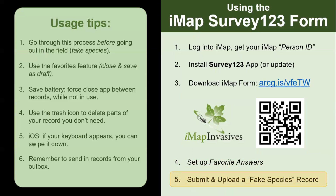Number four: if you started part of a record that you don't want anymore, make sure you hit the trash icon so that you'll be able to submit your full survey. Tip number five is about the keyboard appearing on your screen — on Android, use the back button to make the keyboard go away; if you're on iOS, you need to swipe it down with your fingertip. My last tip is to please remember to send in your records from your outbox so they can be seen by our conservation partners. You should be all set to get outside, report observations of invasive species on the go, and send those records into IMAP Invasives where conservation partners across your state or province can use that information to inform their management strategies. Thanks for reporting.